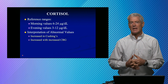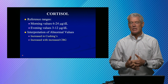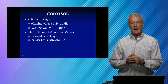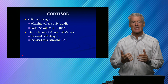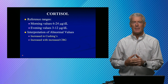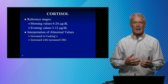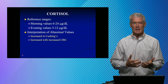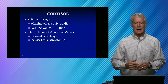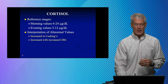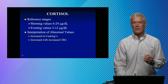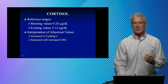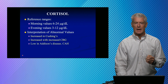If you have an increase of CBG, then your total cortisol is going to be high — it doesn't mean you have Cushing's, it just means you have an excess of CBG. This is very common in pregnancy and in people taking contraceptives. You need to be aware of factors that are changing the CBG if you're trying to interpret a cortisol value.